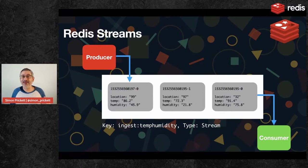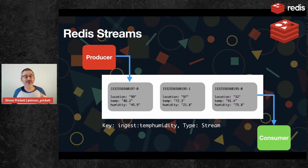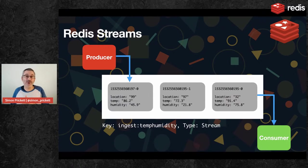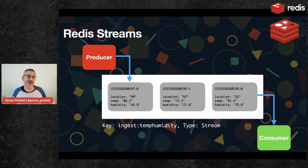You'll see the timestamps have two components: there's a Unix timestamp, and then dash-zero. Streams are so fast at accepting new data that these are microsecond-level timestamps. The dash-zero and dash-one that you see are there in case there are so many entries coming in that more than one is created at the same microsecond. In that case, Redis has a system for that and it starts putting dash-one, dash-two, dash-three on your IDs. So — fast.